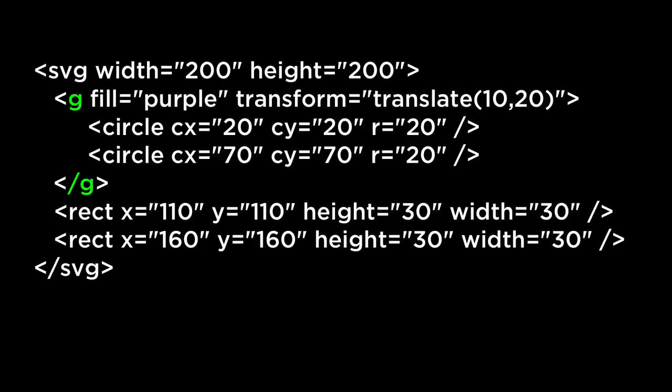SVG group element revisited. The SVG group element is used to group SVG elements together. You can think of the SVG group as a container. The G tag is the SVG group element. Anything inside of the G tag is considered to be inside, or part of, the G container. There are two main reasons to use the SVG group element.